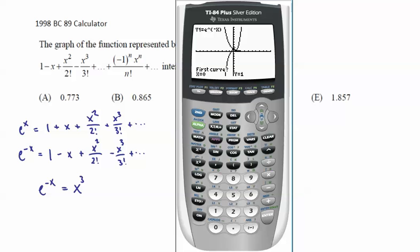So we have second calc, intersect is option 5, and let's see where we are. That would be the first function, second curve, and guess, and it finds it to be there.